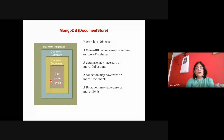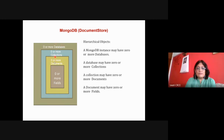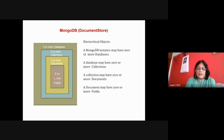Looking at the structure of a document store: a document may have zero or more fields — these are the column key-values where key indicates the column name and value indicates the column value. A group of fields forms a row, which is a document. You have zero or more documents; a collection of documents is your database table. Multiple collections make up your database.